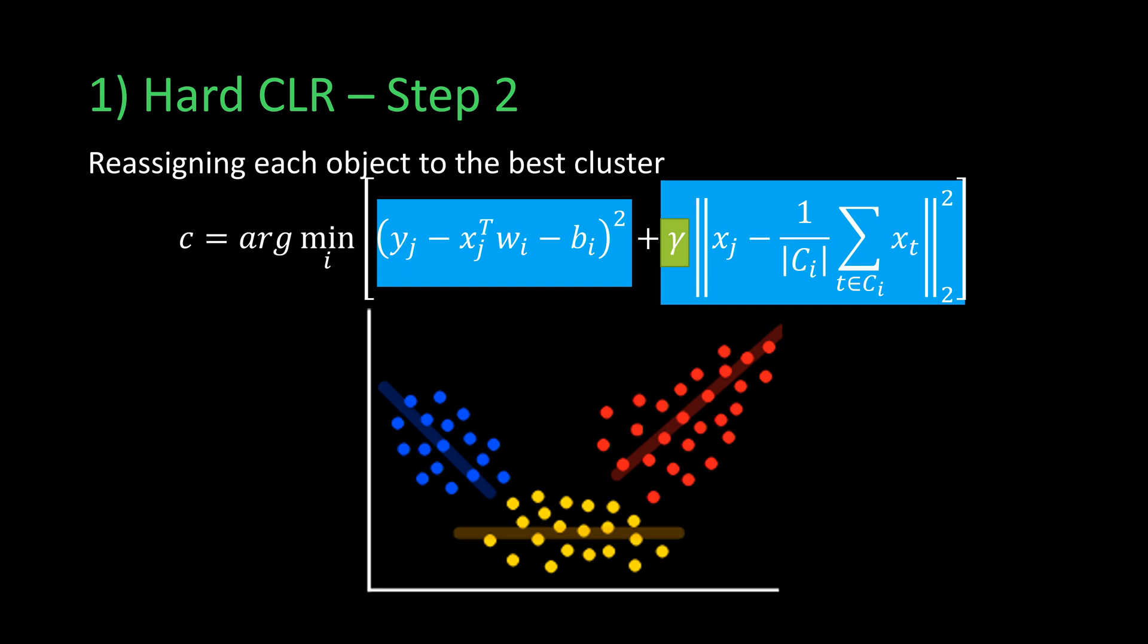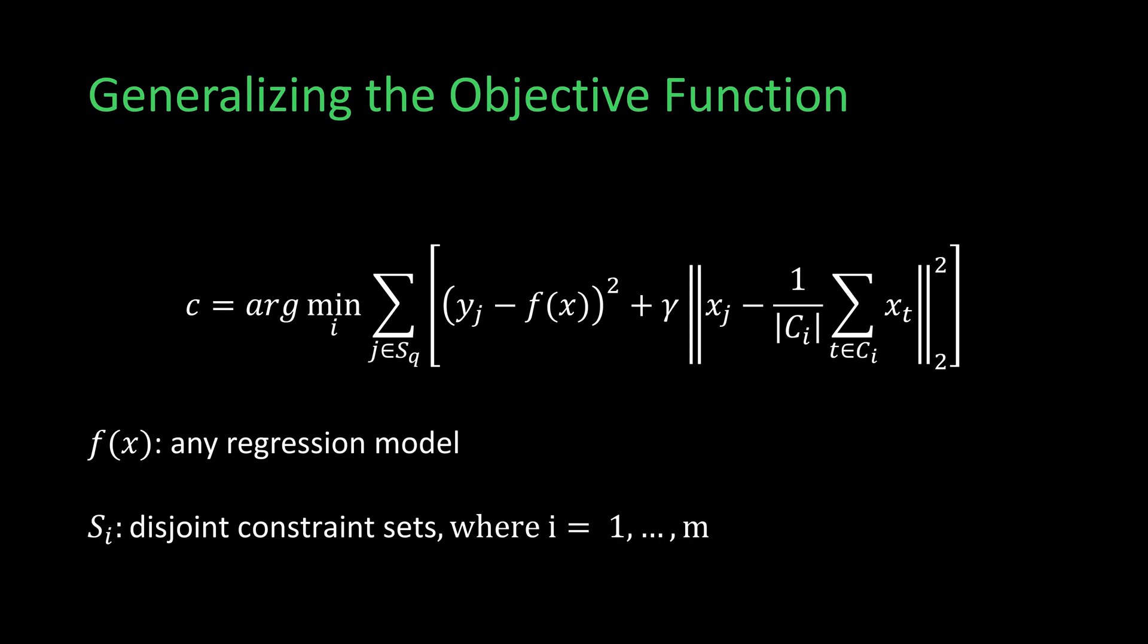However, if gamma is very large, this produces the vanilla k-mean clustering problem. Furthermore, the objective function can be generalized by substituting the linear regression model by any regression model fx, and modifying the cost function to accommodate constraints s in order to preserve the invariant that all points from one constraint set have to go to the same cluster.